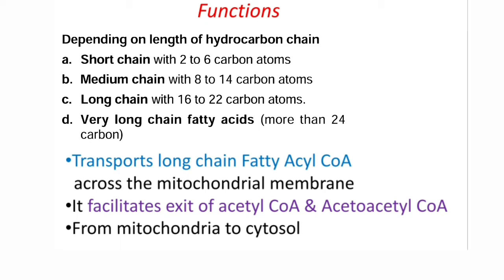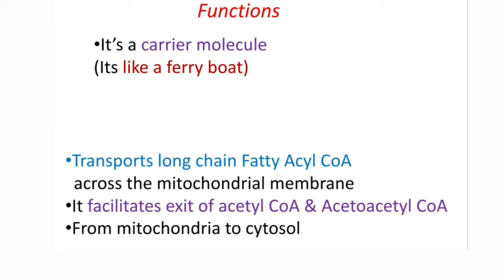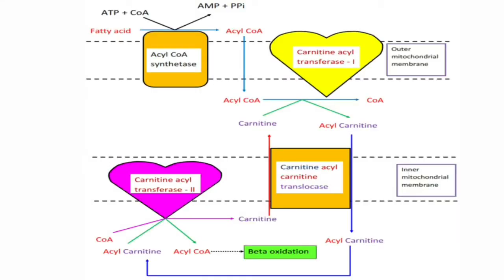Carnitine is required only for the transport of long chain fatty acids — that is, fatty acids with 16 to 22 carbon atoms, or more than 24 carbon atoms. Short chain and medium chain fatty acids, with 2 to 6 carbons and 8 to 14 carbon atoms respectively, do not require a transporter. They can cross the mitochondrial membrane directly, and beta oxidation takes place inside the mitochondria.